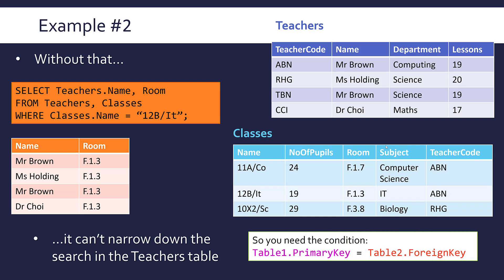If you are taking anything away, please take away the fact that you need to have your first table dot the primary key equals the second table dot the foreign key. Generally those two names will be the same. That enables you to connect up the two tables.